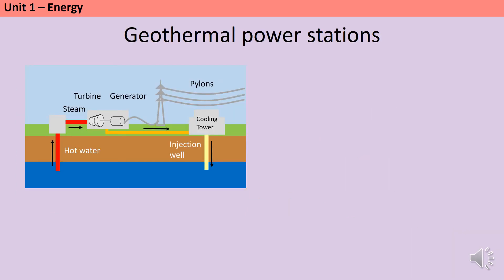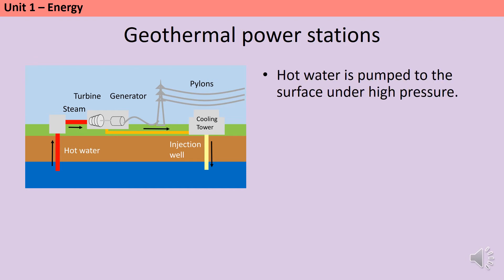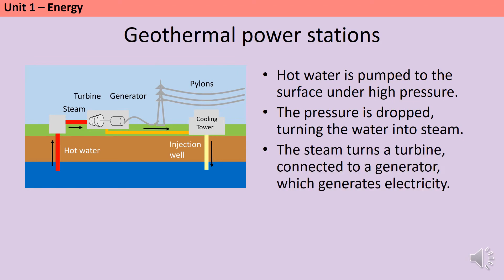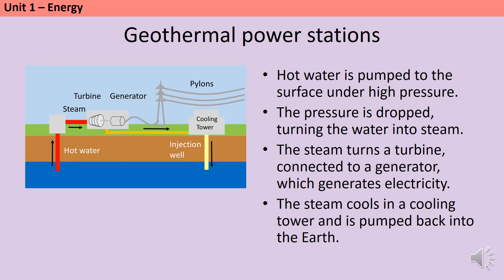Geothermal power stations are found in areas with natural hot water springs. They also use turbines and water, but here the water is in the form of steam. Hot water is pumped up to the surface under high pressure. At the surface, the pressure is dropped, causing the water to turn into steam even though it's not at 100°C. The steam turns the turbine, which is connected to a generator. Then the steam is cooled in a cooling tower and pumped back into the Earth's crust.